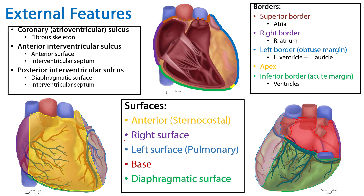So we've discussed the various sulci and appendages and how they relate to deeper septa and structures. We've also discussed the various surfaces of the heart and the various borders of the heart and how they relate to different chambers.